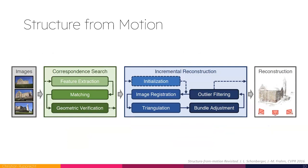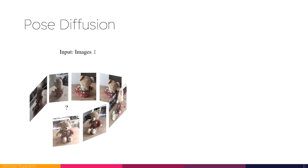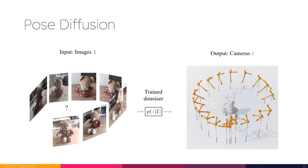We looked at one long-standing problem in computer vision: structure from motion, where given a set of images you try to both reconstruct the underlying world and the camera poses that come with it. Looking at the COLMAP pipeline — basically the same for the last 20 years — you see a loop that gradually improves the estimate of camera poses and the 3D model. We thought this somehow matches the setup of a diffusion model. So we came up with pose diffusion: a model where you feed in a collection of images and it denoises a set of camera poses over all these images.